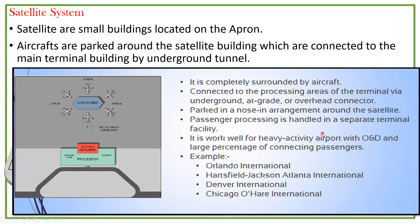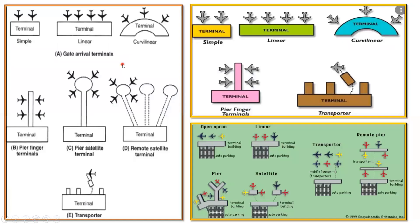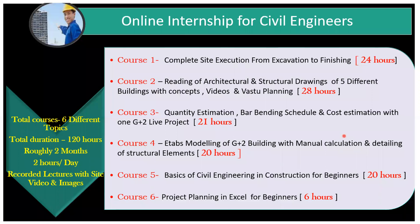The satellite system works very well for heavy activity airports and for a large percentage of connecting passengers. Examples include Orlando International Airport, Hartsfield-Jackson Atlanta International Airport, and Denver International Airport. To sum up, we have a simple linear terminal, a curvy linear terminal, pier or finger terminals, pure satellite terminals, and remote satellite terminals — all representing different aircraft parking layouts.